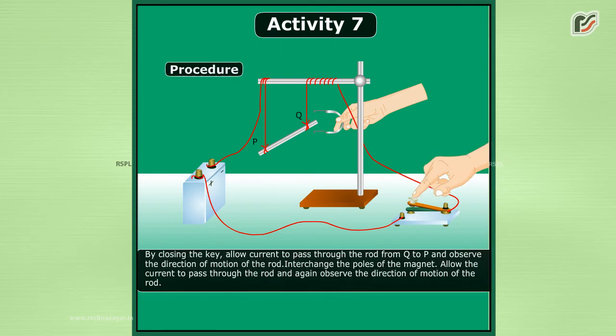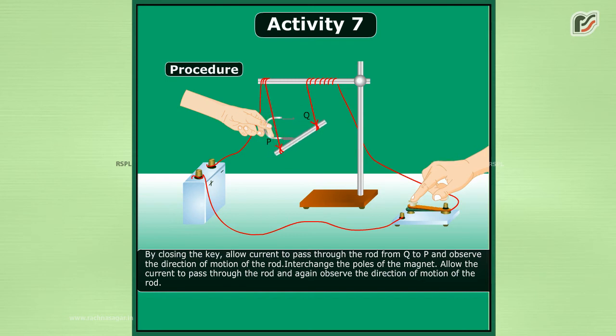Procedure: By closing the key, allow current to pass through the rod from Q to P and observe the direction of motion of the rod. Interchange the poles of the magnet. Allow the current to pass through the rod and again observe the direction of motion of the rod.